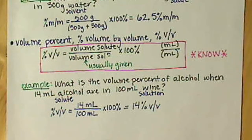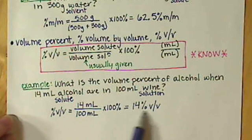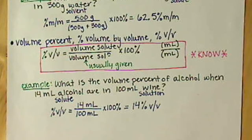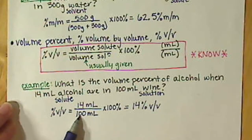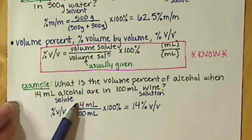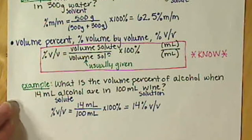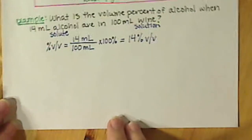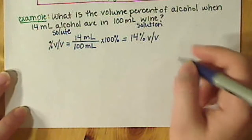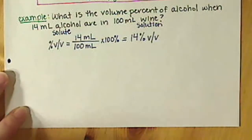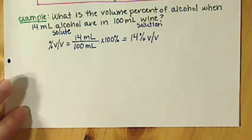If you ever look at the bottom of a wine bottle label, you'll see this type of expression — it's telling you the percent concentration of alcohol in that wine. So for every 100 milliliters of wine, 14 milliliters of that is just alcohol; the rest is your solvent. Our third type of percent concentration is a hybrid of both mass percent and volume percent.